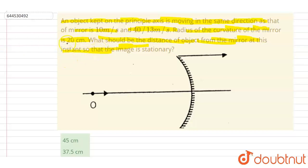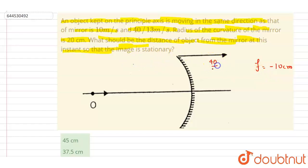The radius of curvature is given and this is a concave mirror, so the focal length will be negative 10 centimeters. The mirror velocity is 40/13 meters per second.